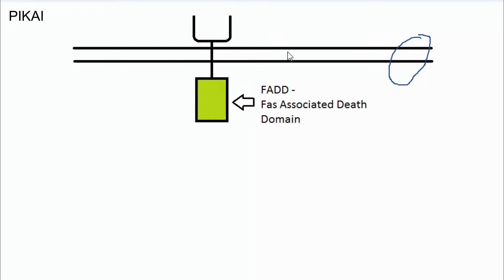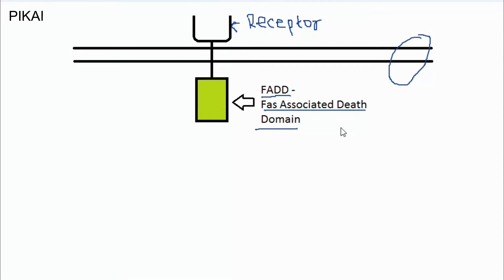This is the cell membrane, and here is the receptor present on the outer side of the cell membrane. It is attached to an internal domain known as FADD — the FAS-associated death domain, also simply called the dead domain. The receptor is connected to this death domain.